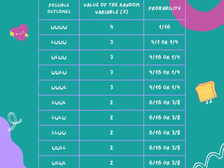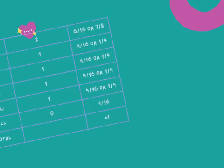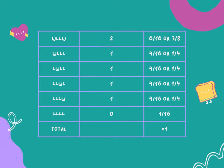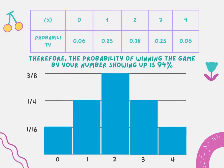Here are our possible outcomes obtained, and we have the probability histogram. The probability shown for this one is 94%. We obtained that by simply adding the values for numbers 1 to 4: 0.25 plus 0.38 plus 0.25 and 0.06, giving us 0.94, which is equivalent to 94%.